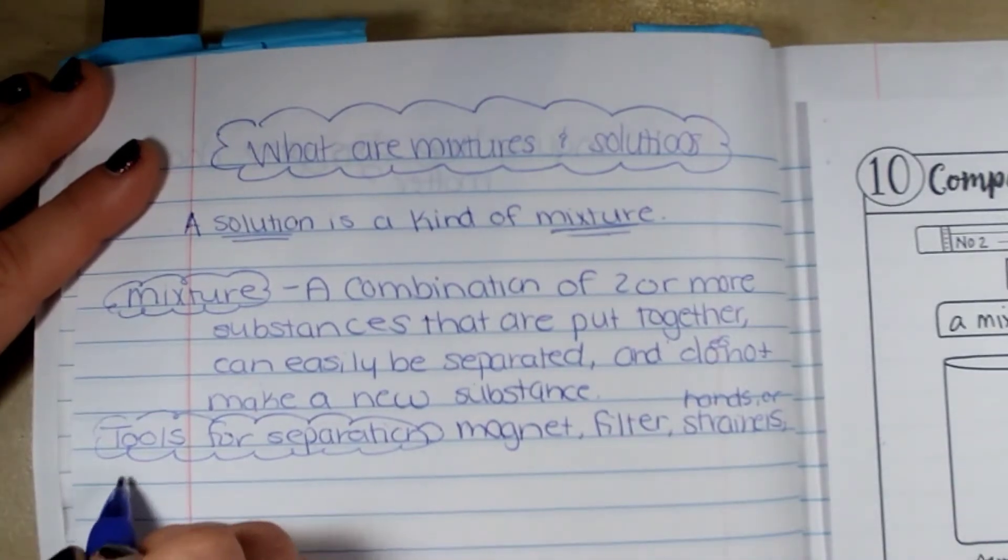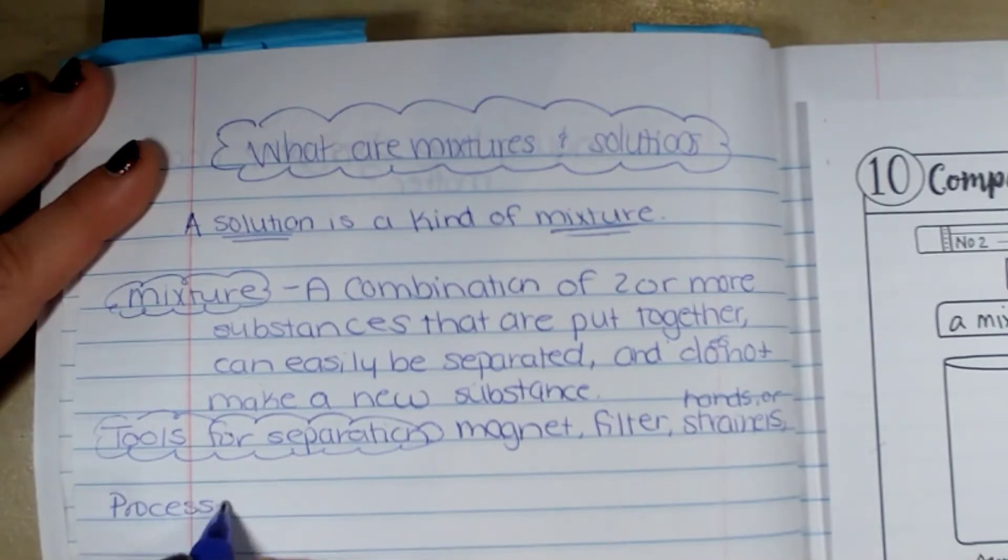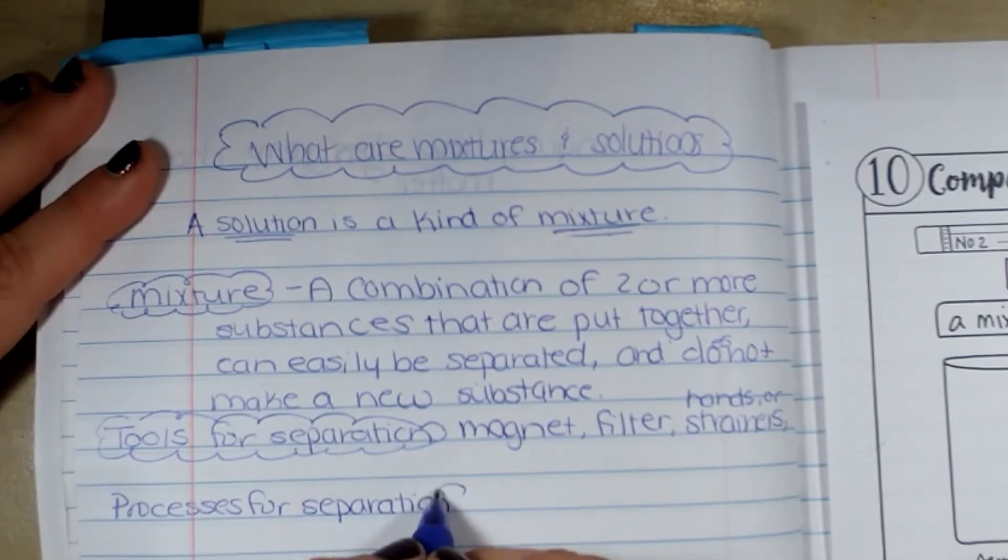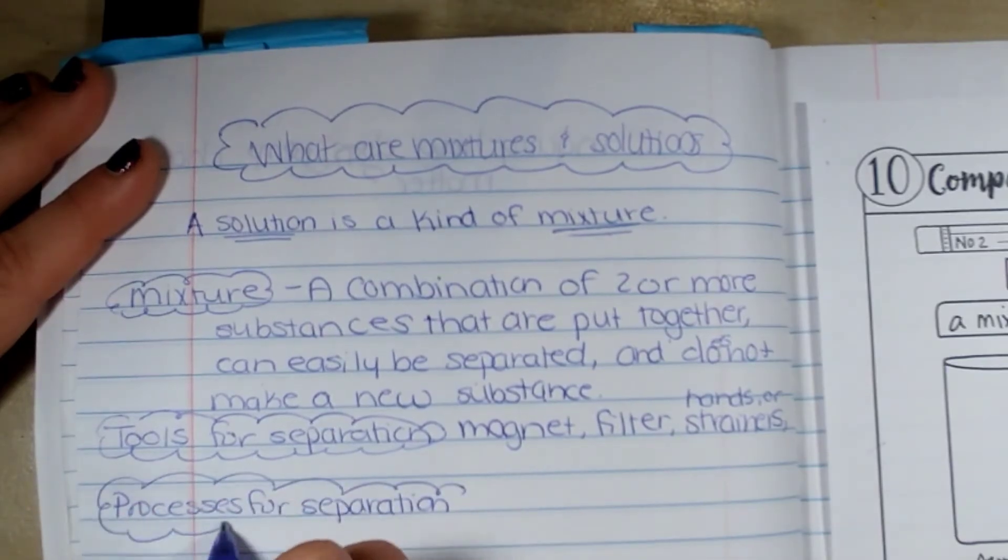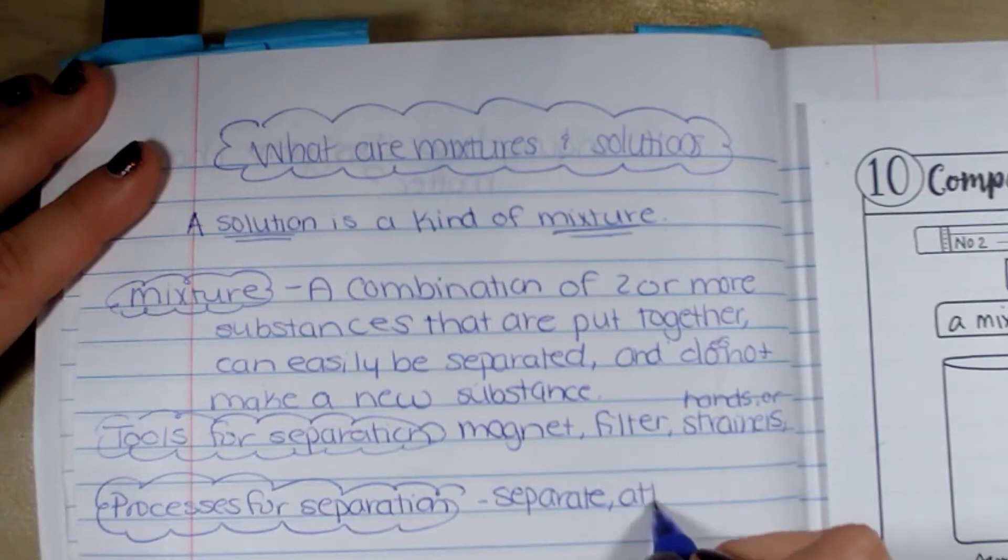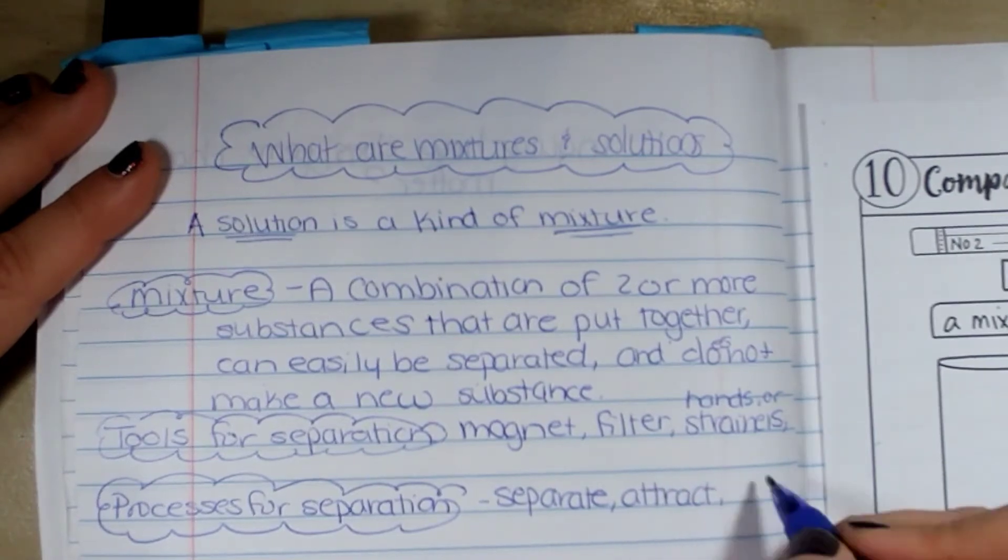Some processes for separation, ways to separate the different things for mixtures, would be to separate, attract, filter, or strain.